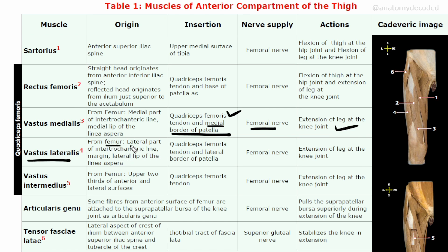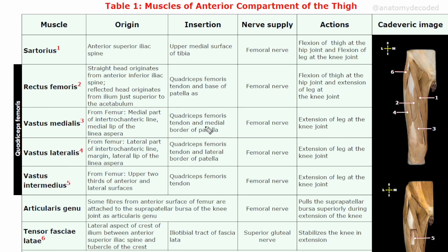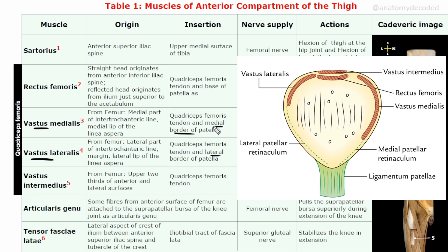Vastus lateralis arises from the lateral part of the intertrochanteric line and the lateral lip of linea aspera. Insertion is via the quadriceps femoris tendon to the lateral border of the patella. Nerve supply is the femoral nerve. Action is extension at the knee joint. One key difference: vastus medialis has an extensive attachment on the medial border of the patella that prevents lateral displacement of the patella, whereas the lateral attachment of vastus lateralis is not as extensive.